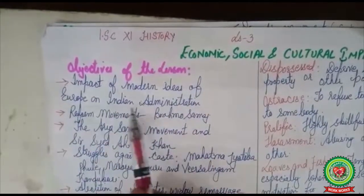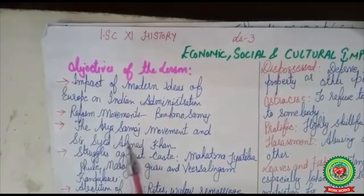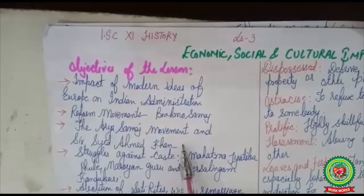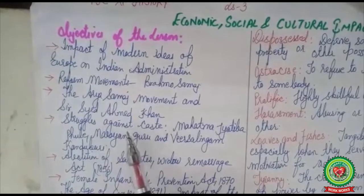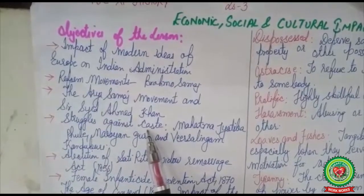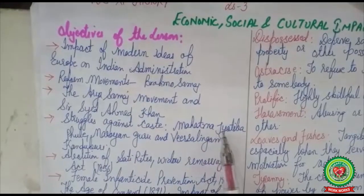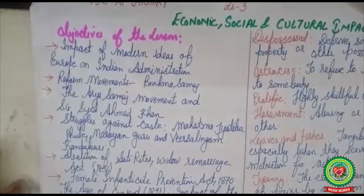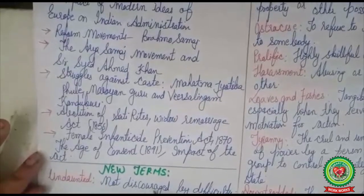We had already discussed the impact of modern ideas of Europe on Indian administration and Brahmo Samaj in the last session. We had also discussed the Arya Samaj movement and Syed Ahmad Khan with his Aligarh movement. In today's session we are going to discuss the struggle against caste — those reformers who stood against the caste system in India — covering the contributions of Mahatma Jyotiba Phule, Narayan Guru, and Varisalingam Kandukuri.